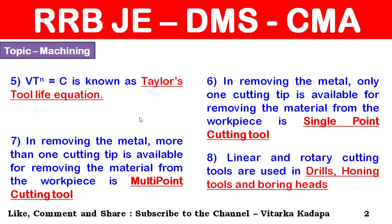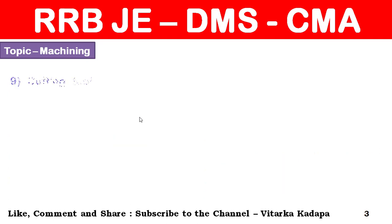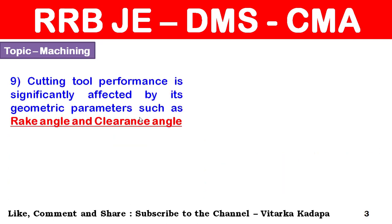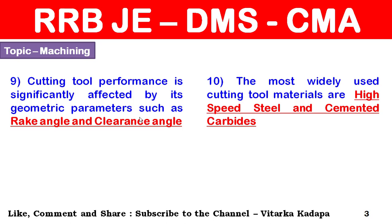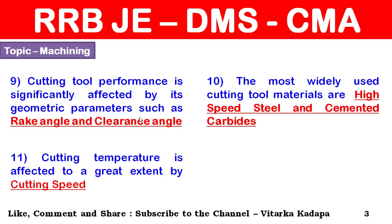Linear and rotary cutting tools are used in drilling, honing, and boring heads. Cutting tool performance is significantly affected by its geometric parameters such as rake angle and clearance angle.